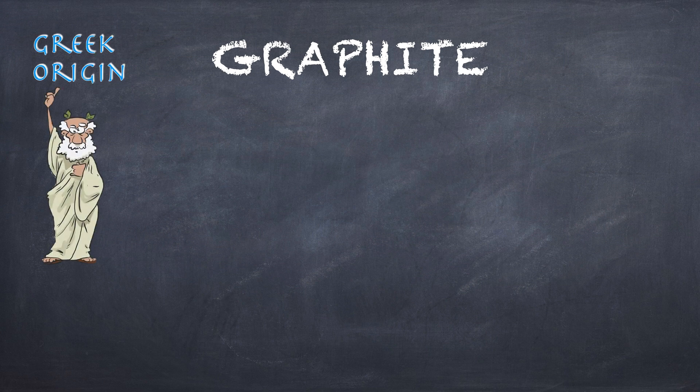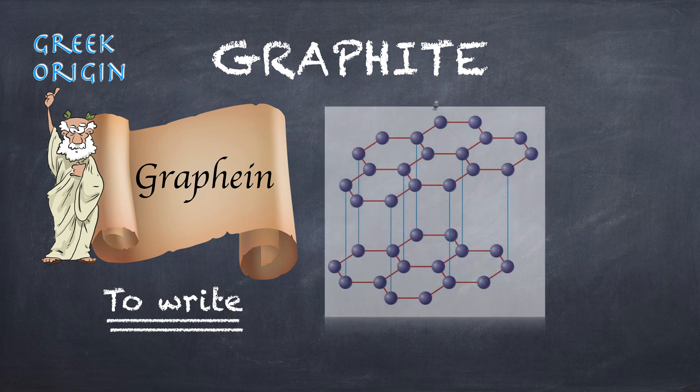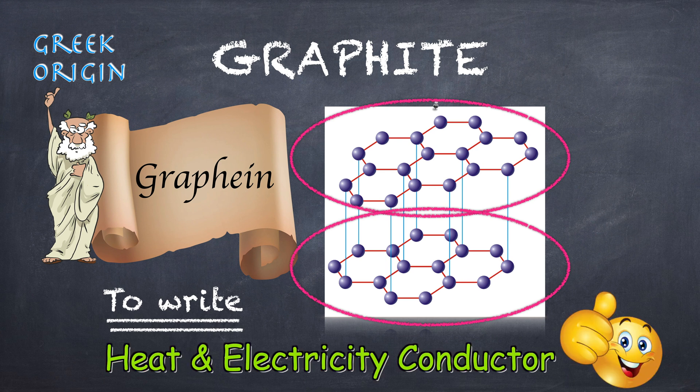The name graphite comes from the Greek verb graphene, which means to write. In graphite, the carbon atoms are joined in sheets of linked hexagons that look like chicken wire. Graphite is a soft, slippery solid that is a good conductor of both heat and electricity.